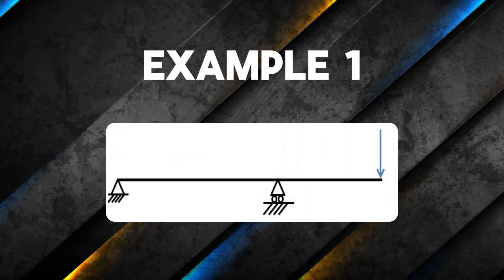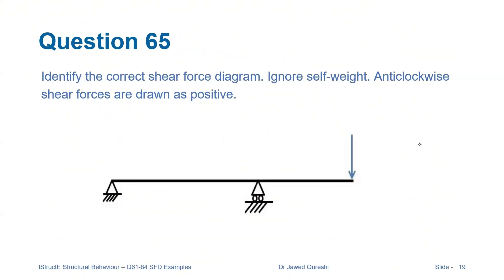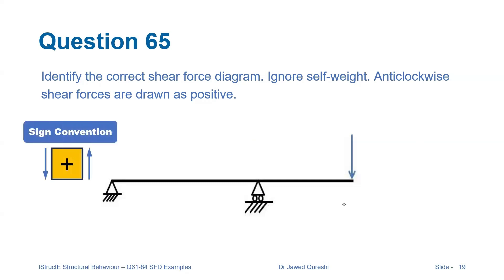Grab your pen and let's get started with our first example. I'm Dr. Javid Kurishi, a senior lecturer in structural engineering and design. In our first example, we need to identify the shear force diagram. We ignore self-weight, and anti-clockwise shear forces are positive — meaning upward forces on the left are positive and downward forces on the right are positive.